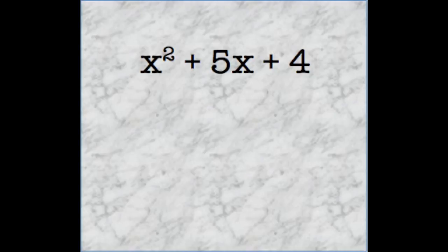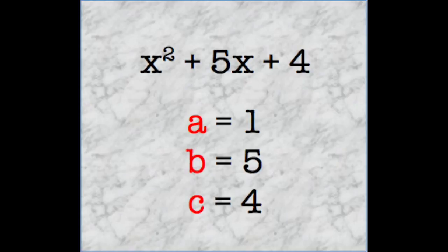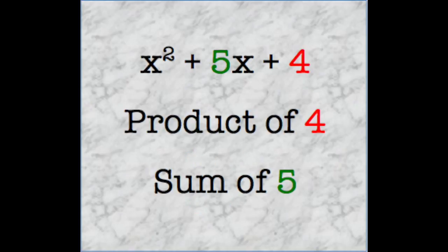So if we want to factor a quadratic that looks like this, we see that our a value is 1, our b value is 5, and our c value is 4. We need to find two numbers that have a product of 4 and a sum of 5.